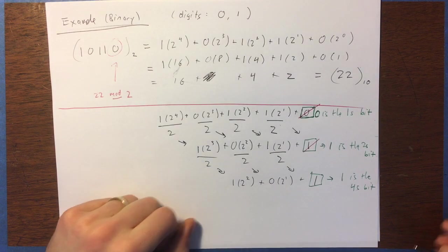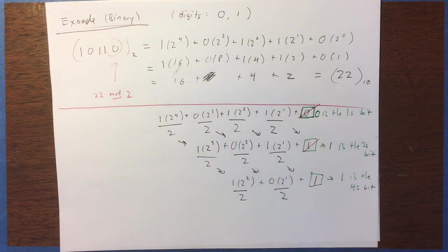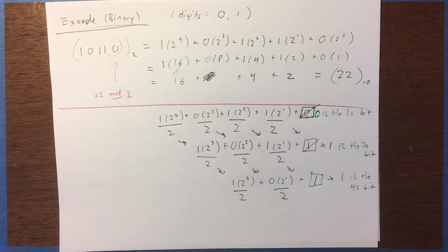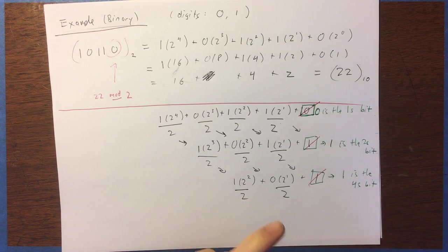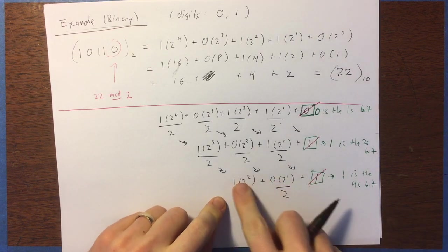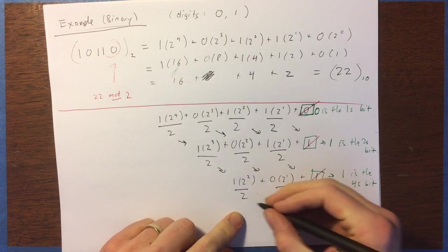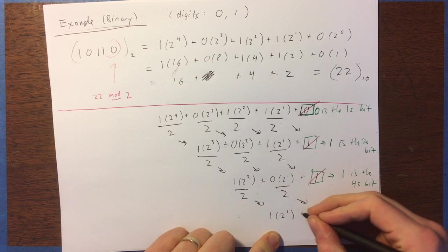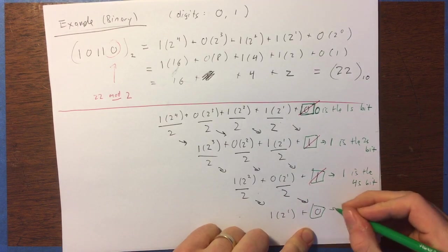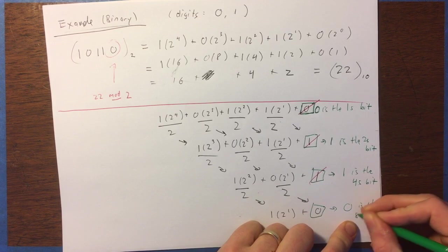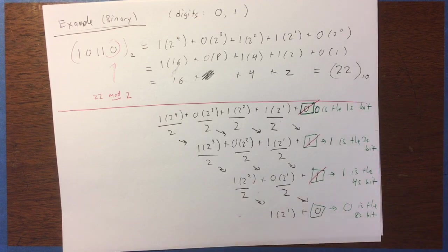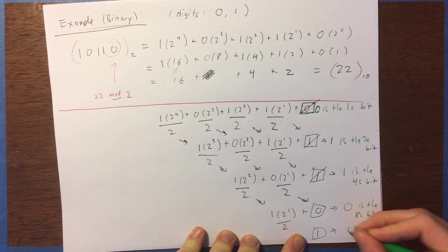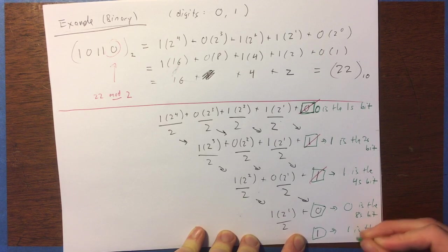And then we'll repeat. As you can see, this is showing an algorithm. Essentially what we're doing is dividing by 2 and looking at the remainder, then getting rid of that remainder, taking just the quotient, and dividing that by 2. This shifts over and we get 1 times 2 to the power of 1, plus 0 — so there's our 8's bit. And then lastly, divide that by 2 and we get a 1, which is going to be our 16's bit.